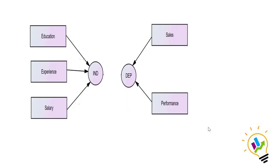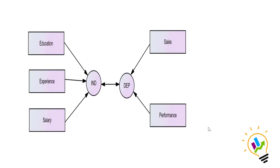To find the correlation between the independent variables and the dependent variables, the system will consider all three independent variables on the left side as one canonical variable. The system will then find the canonical correlation between the independent canonical variable and the dependent canonical variable. The number of canonical correlations will be decided based on the minimum number of variables in the dependent variable set and the independent variable set. The least number of variables among the sets will be taken as the number of canonical correlations.